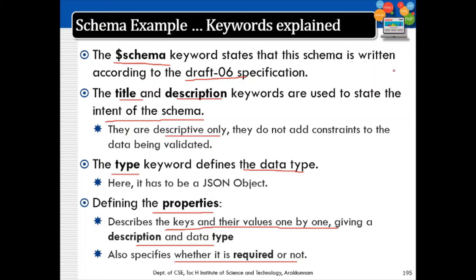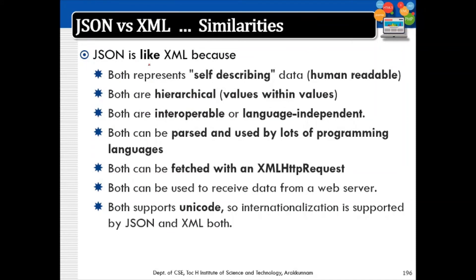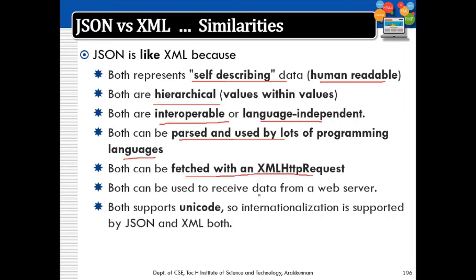These are the similarities between JSON and XML. JSON is like XML in that it is self-describing and human-readable. Both are hierarchical and both are interoperable and language independent. Both can be parsed and used by many programming languages, both can be fetched with an XMLHttpRequest to receive data from a web server, and both support the Unicode character set.